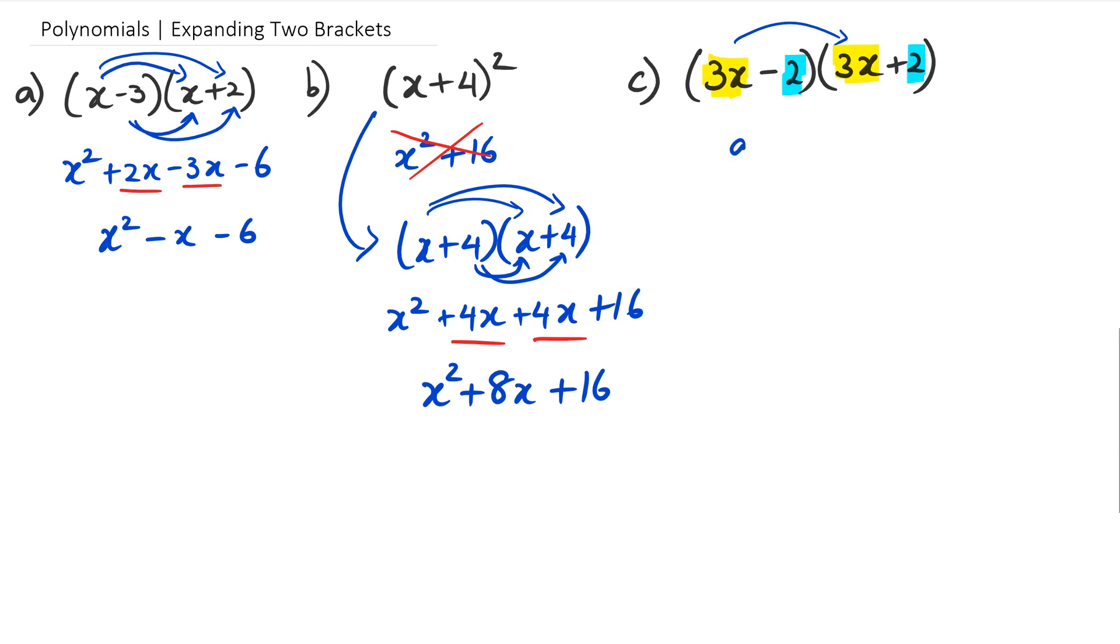So 3x times 3x is 9x squared, and then 3x times positive 2 is 6x, negative 2 times 3x is negative 6x, and then negative 2 times positive 2 is negative 4. Now what you'll notice is that the middle part here is going to become 0 because of the plus 6x and the minus 6x, and you end up with 9x squared minus 4.